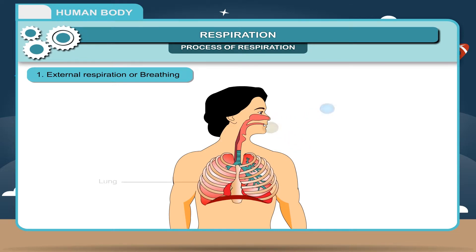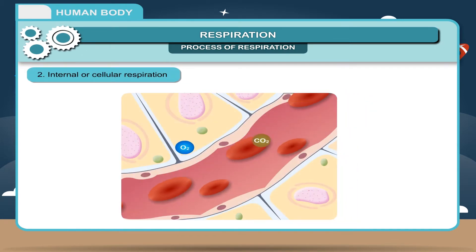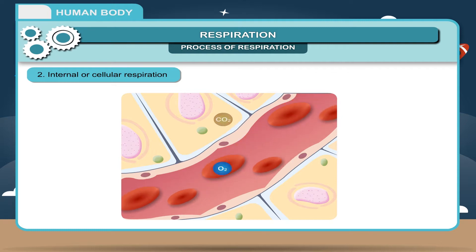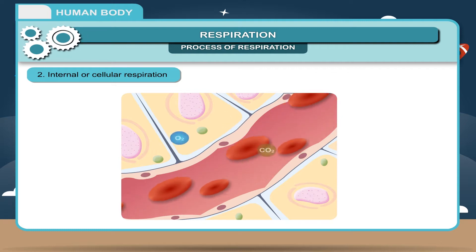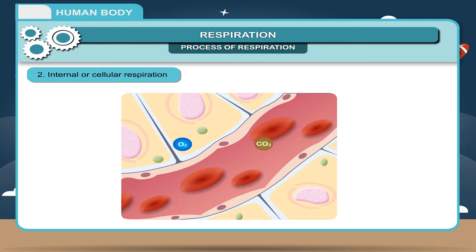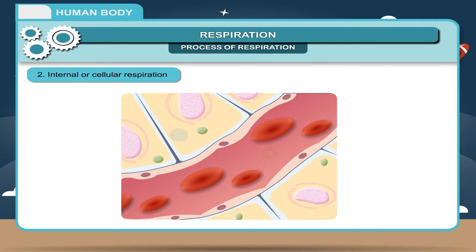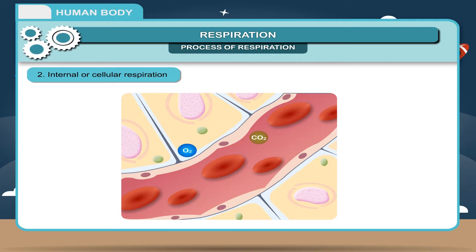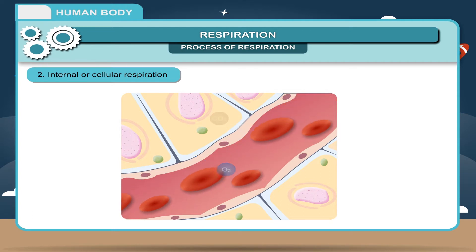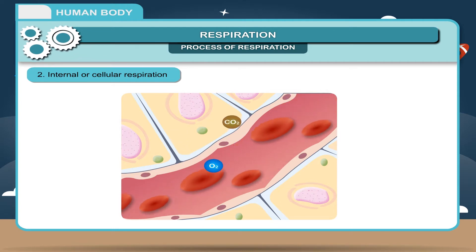This takes place through the lungs. 2. Internal or cellular respiration: In this process, oxygen is used inside the living cells to break down the molecules of glucose — food — releasing energy and carbon dioxide. The difference between respiration and breathing is given in Table 7.1.